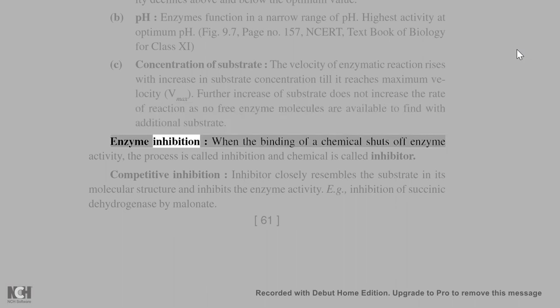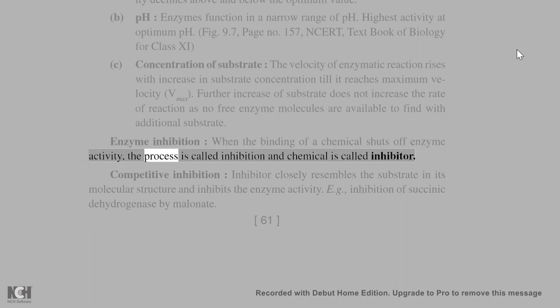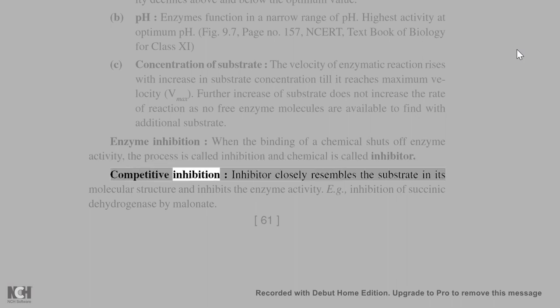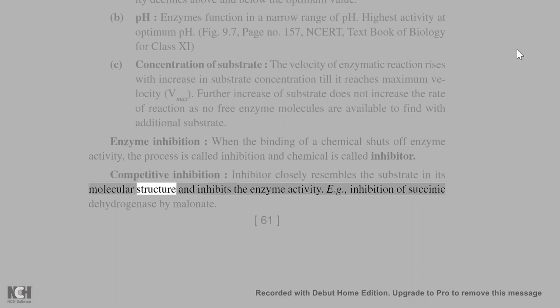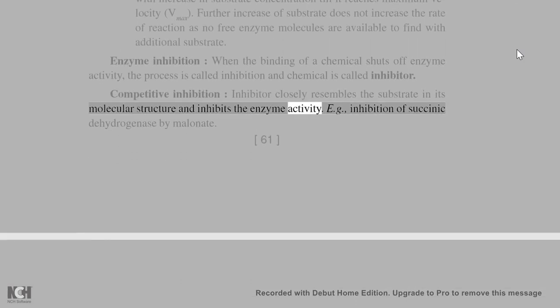Enzyme inhibition: when the binding of a chemical shuts off enzyme activity, the process is called inhibition and chemical is called inhibitor. Competitive inhibition: inhibitor closely resembles the substrate in its molecular structure and inhibits the enzyme activity, e.g., inhibition of succinic dehydrogenase by malonate.